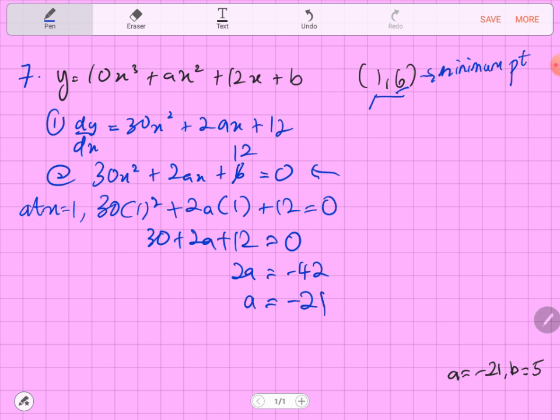How do we get b? We also know this point. 1 is the x-coordinate and 6 is the y-coordinate. This point will satisfy the curve equation. We know already what is our a, then we can find what is our b. We can substitute this point into the equation.